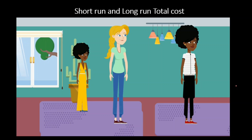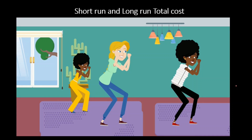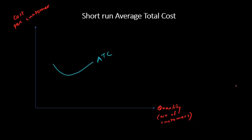Suppose my number of customers reduces from five to three. In the short run, I cannot make any changes to my fixed capacity — I cannot suddenly shift my rental space or dispose of unused equipment. So my fixed costs would not change, which increases the average total cost per customer. On the graph, I remain on the same average total cost curve, but my cost has increased from $50 to $70 per customer.